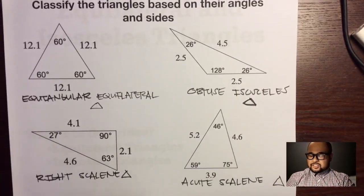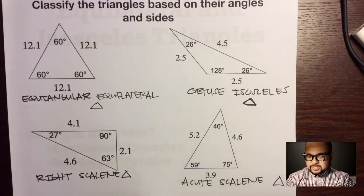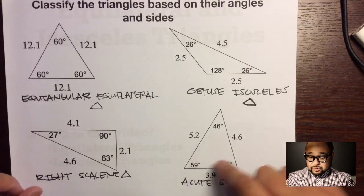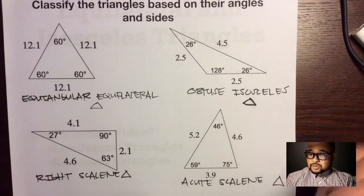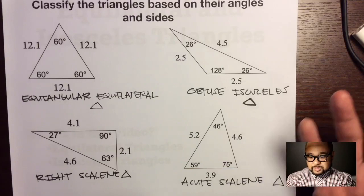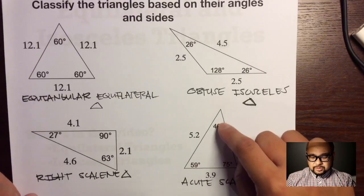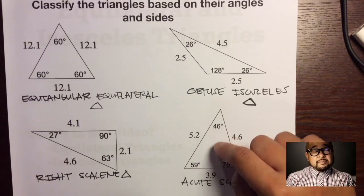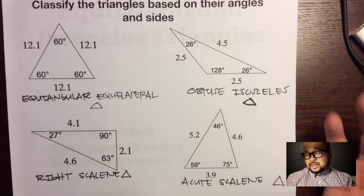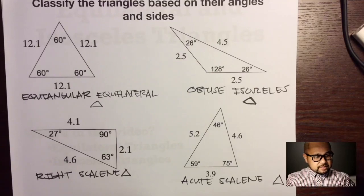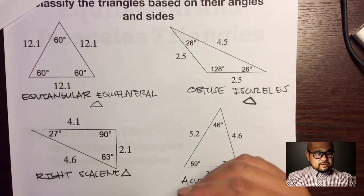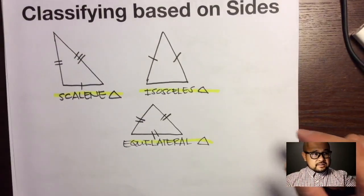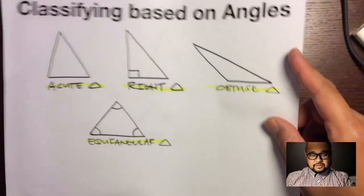One important hint: there may be examples where only two angles are shown. Before concluding what type of triangle it is based on its angles, always find that third angle first. Make sure you always know the measures of all three angles before classifying. Know the different types of triangles based on both their sides and their angles.